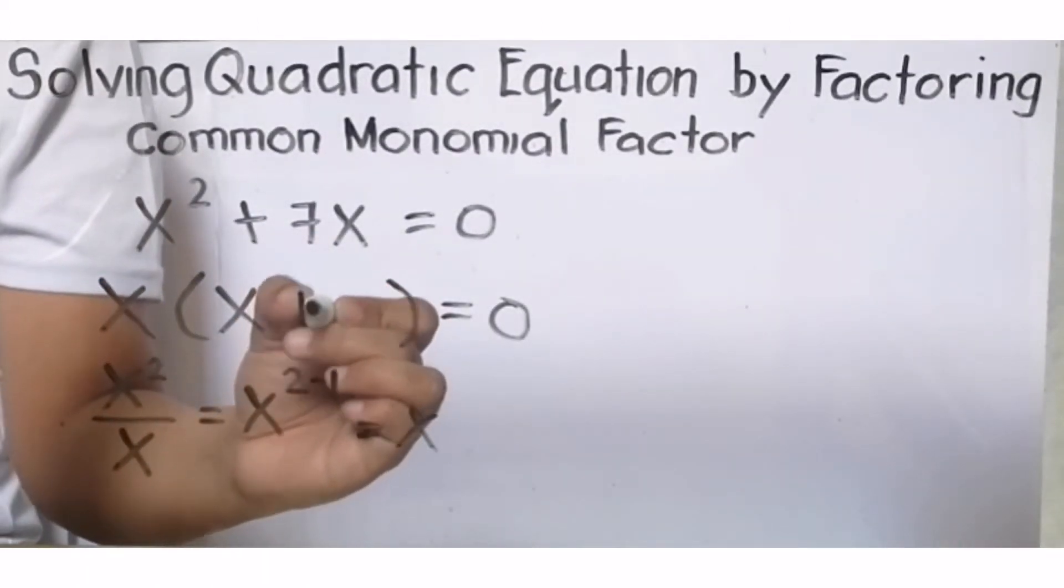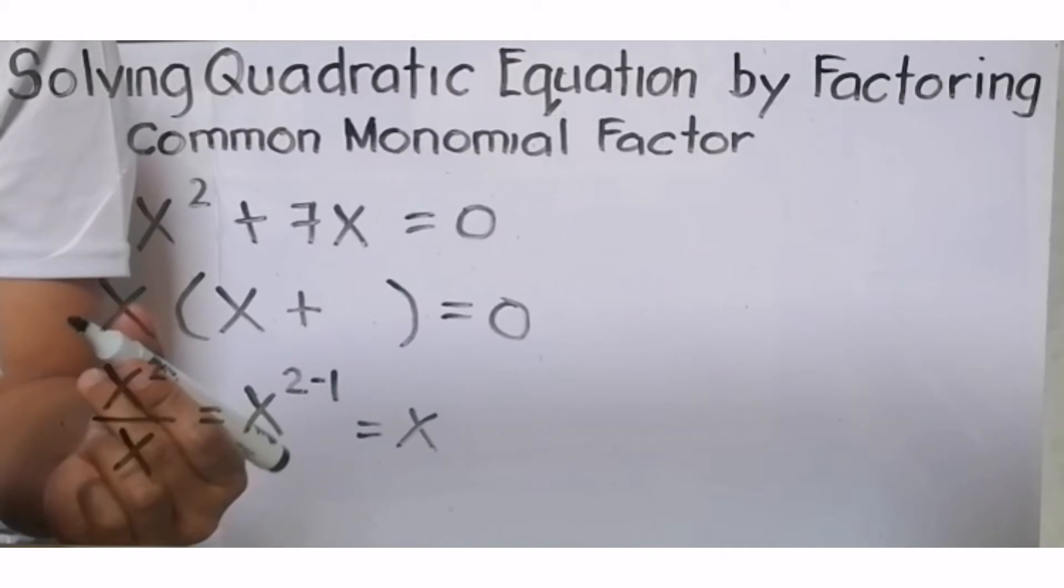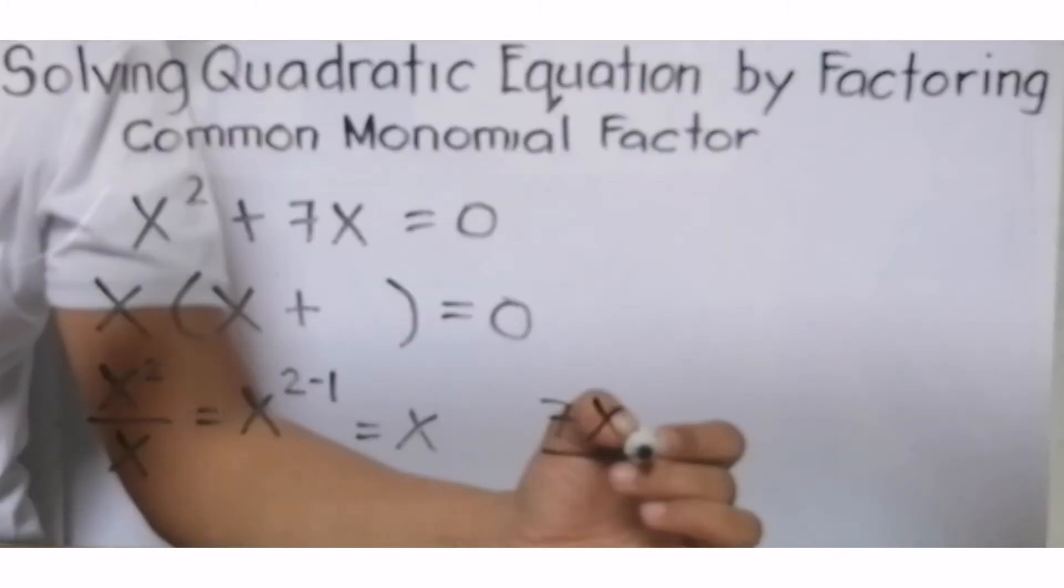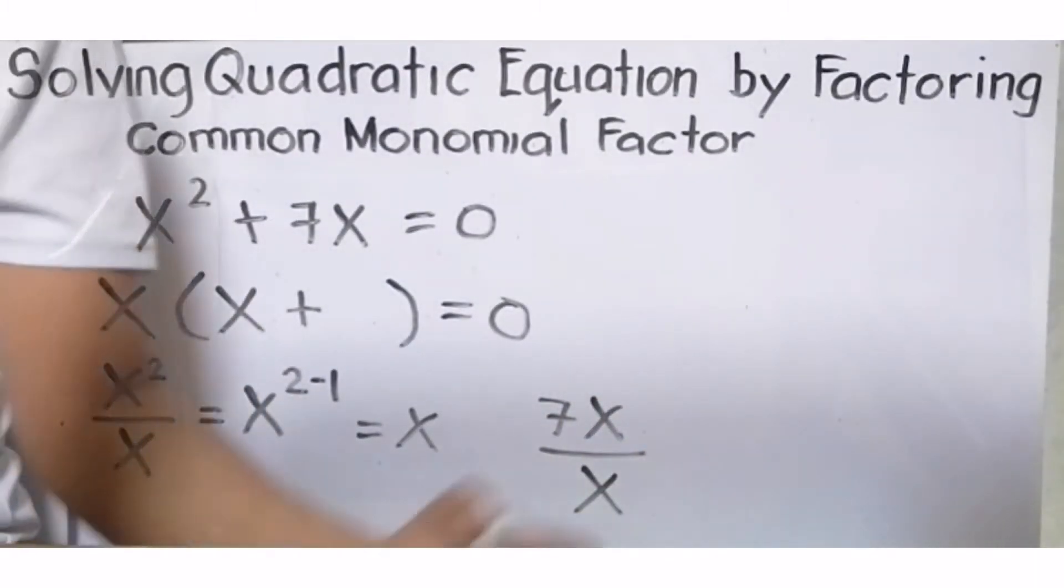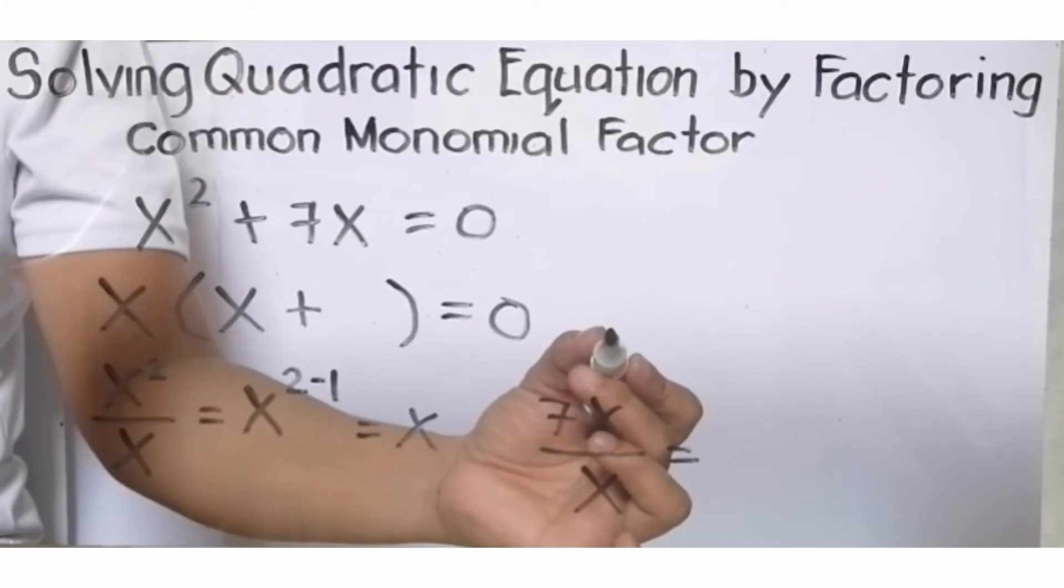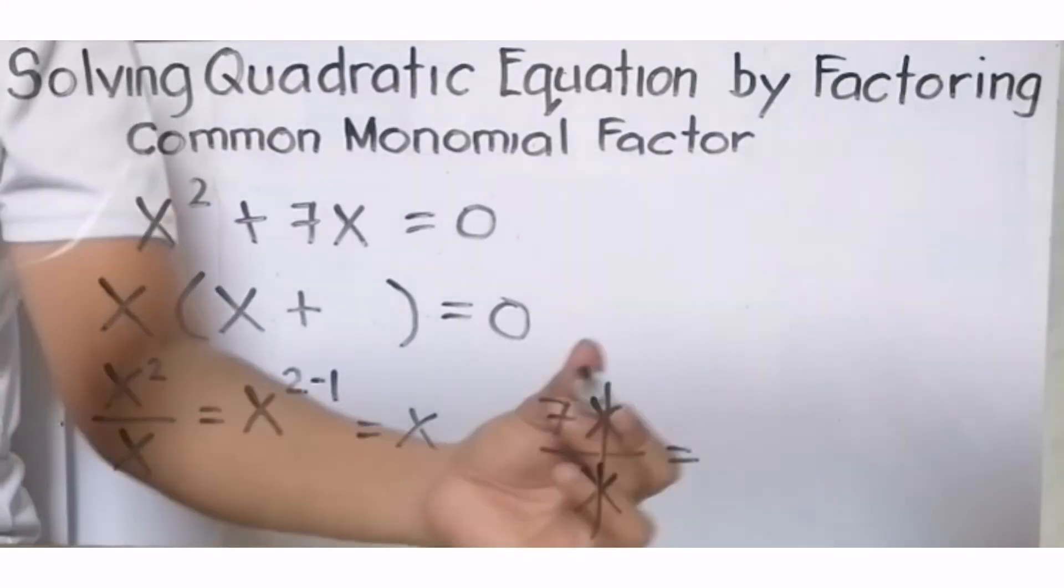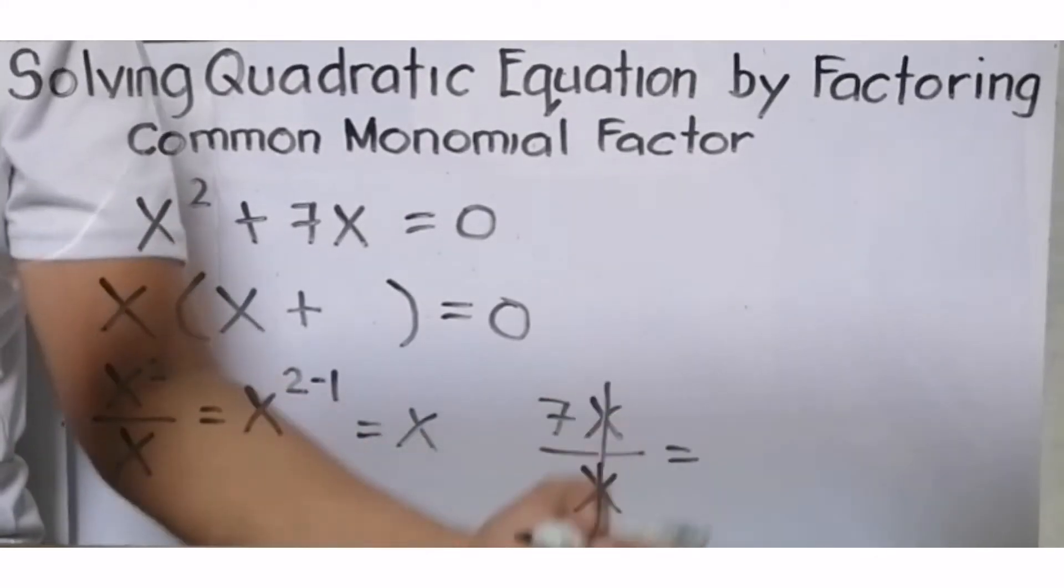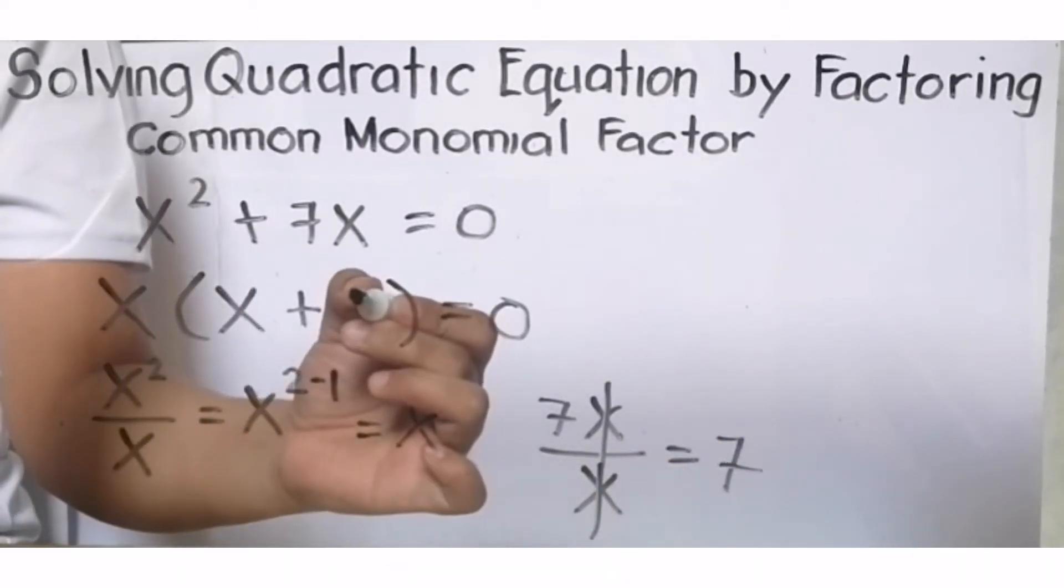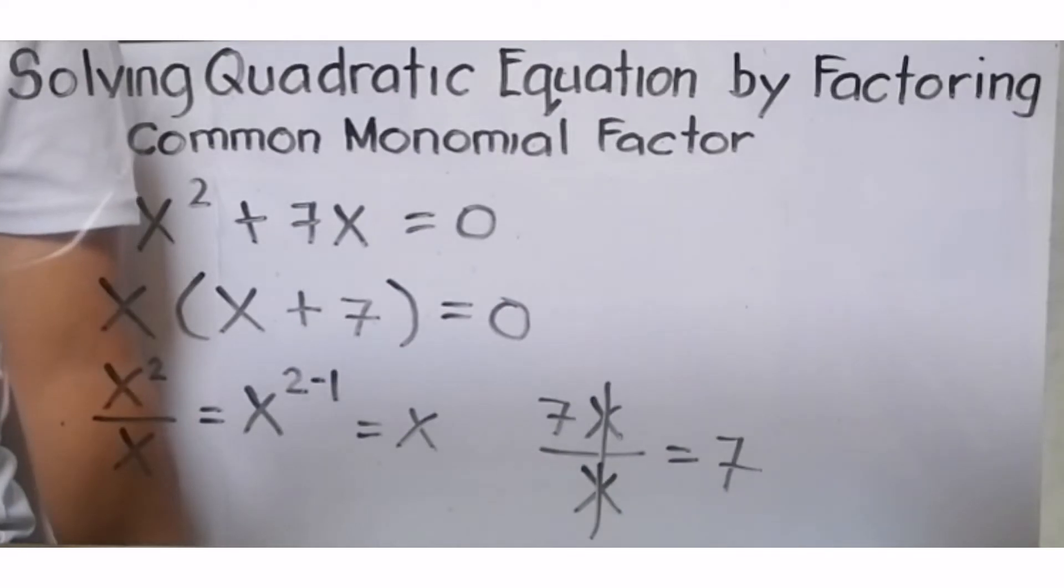Now, plus ang operation, ilagay na rin natin na plus ang operation dahil positive rin lang naman ang nilabas natin na x. Next, let us divide 7x by x. Mas madaling i-divide kasi nakikita natin na may common factors ang numerator at ang denominator, which is x over x. Because x divided by x equals 1, kaya na-cancel out na siya dyan. Ang sagot, 7. Idugtong natin ito sa ating polynomial factor na nasa parenthesis.